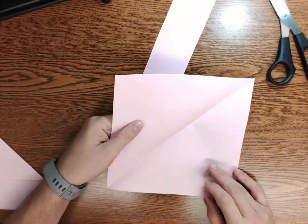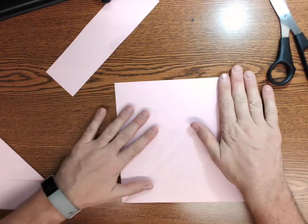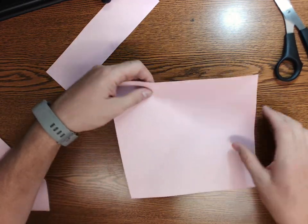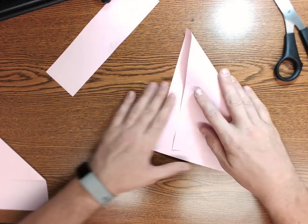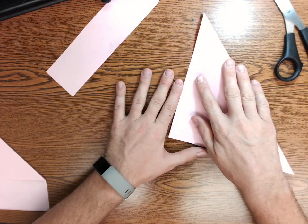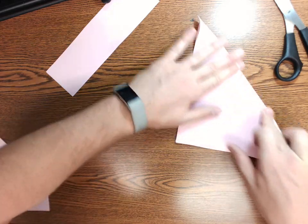Then you can unfold it. You should have pretty much what looks like a square. Now the opposite direction, go ahead and fold that corner to corner.